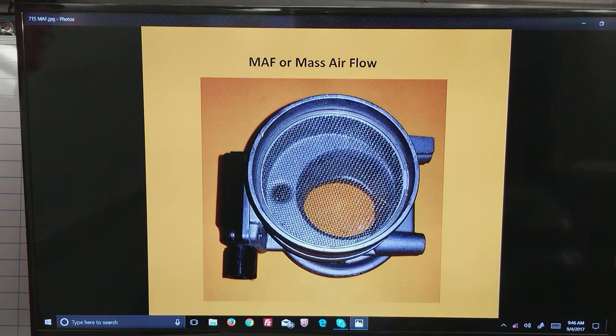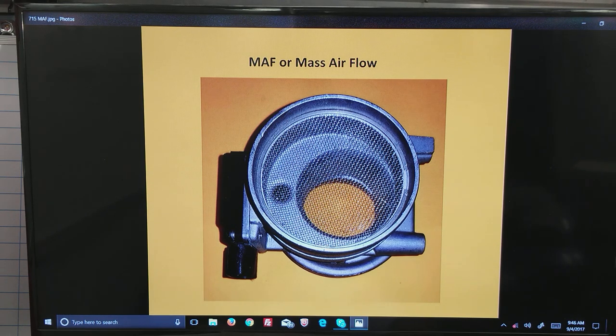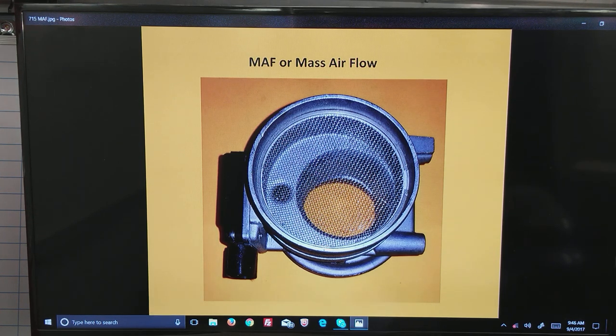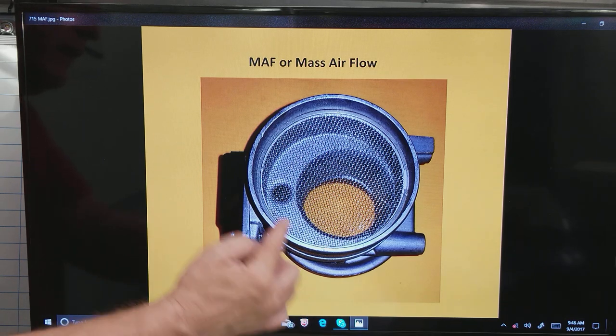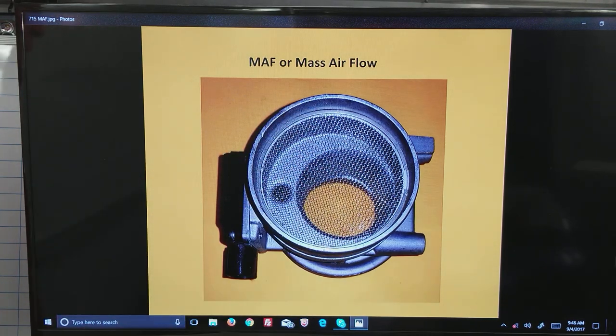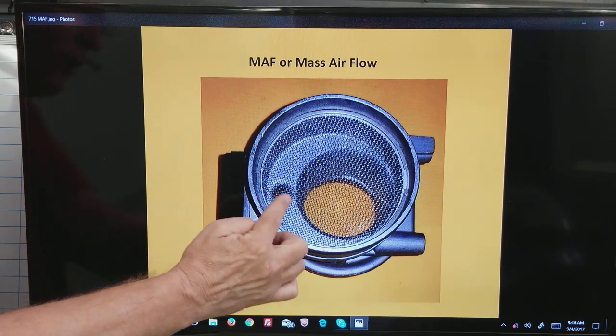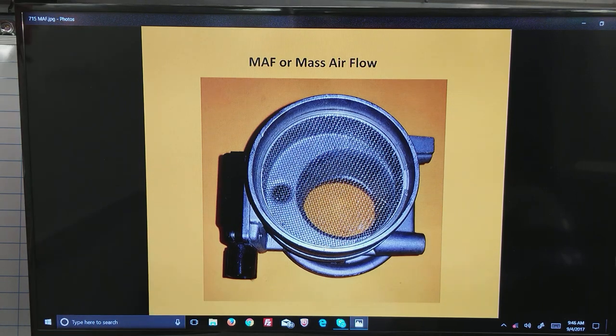Mass airflow, MAF—these go by a couple of different names, MAF or mass airflow are the two most common names. These things were designed, to the best of my knowledge, or at least became popular with Ford in about 1990. They became popular in the Tauruses. This happens to be an early Taurus one. The way this thing works is air comes down through this known size hole that's maybe two inches. There's also a smaller hole that has a heated wire in it, and what they do is these things know the temperature of the air coming past the wire.